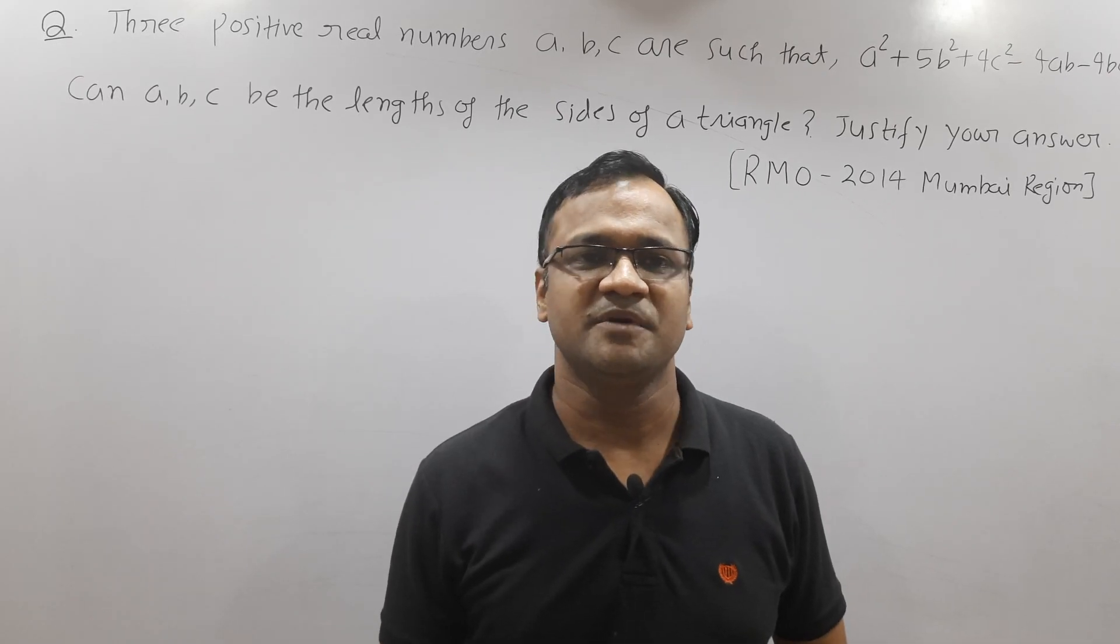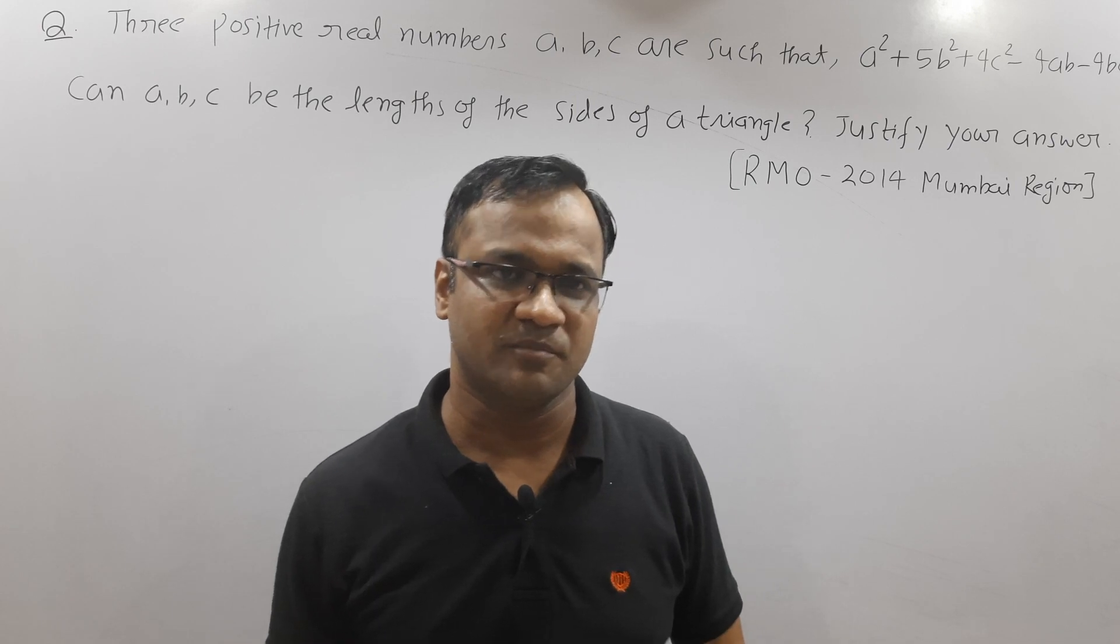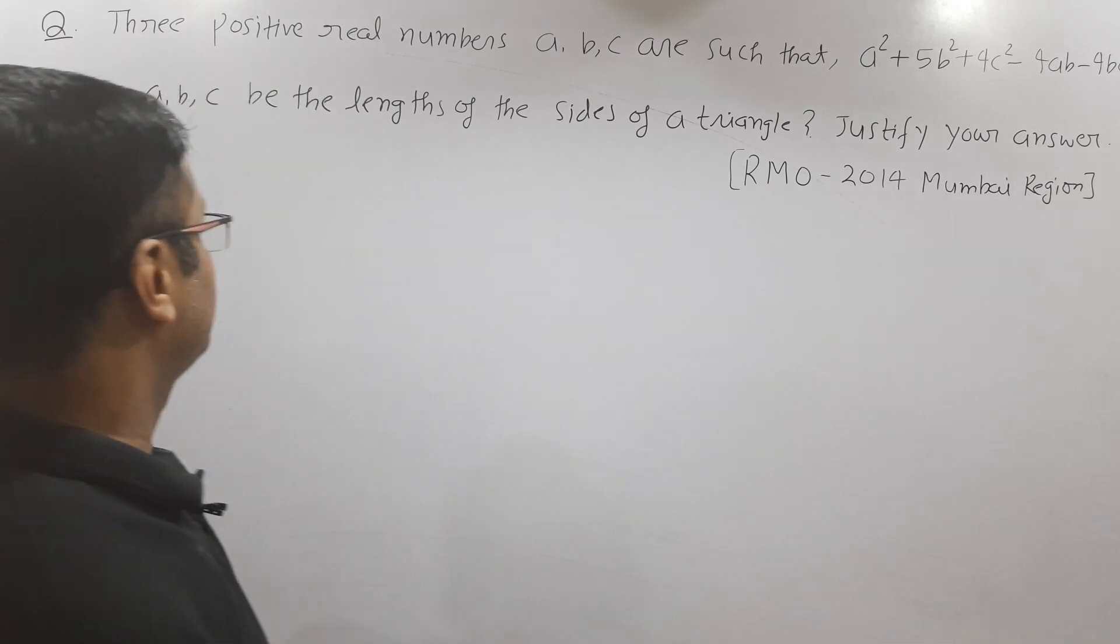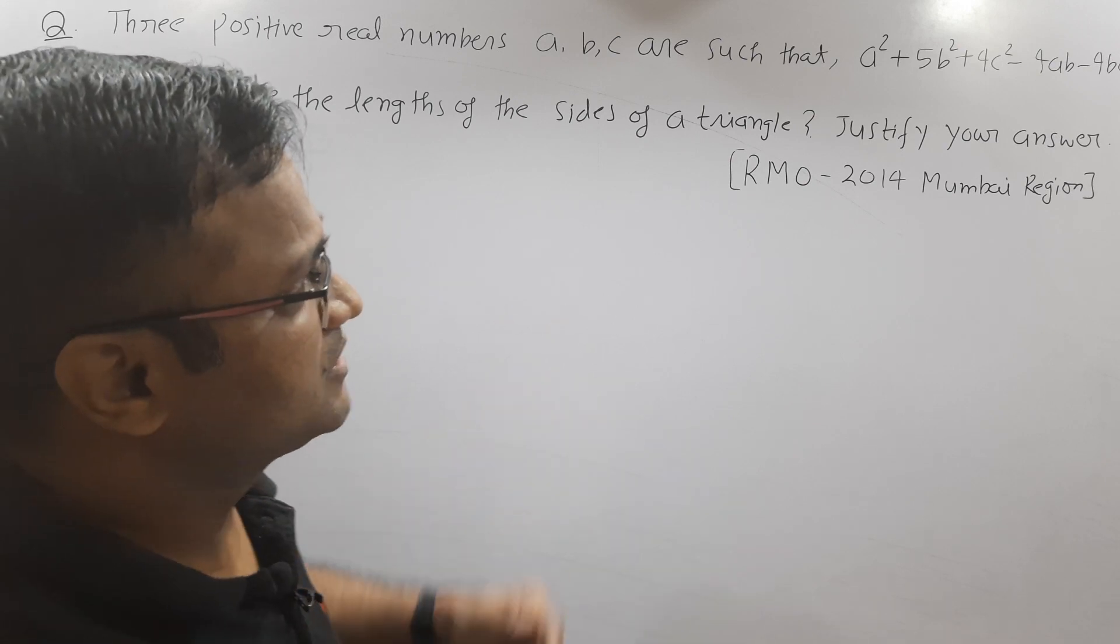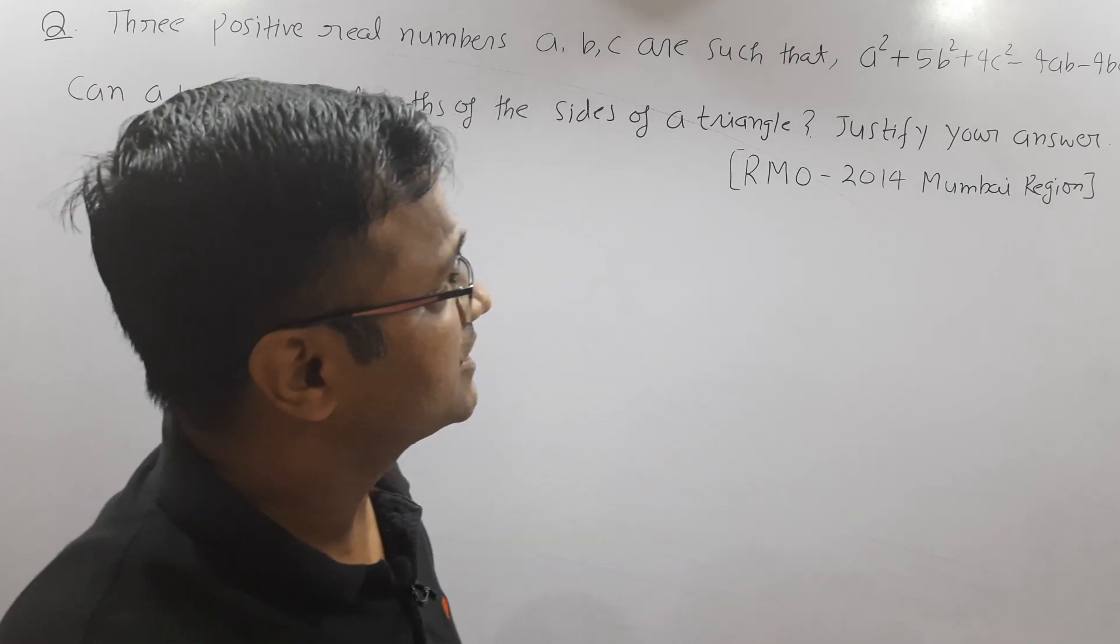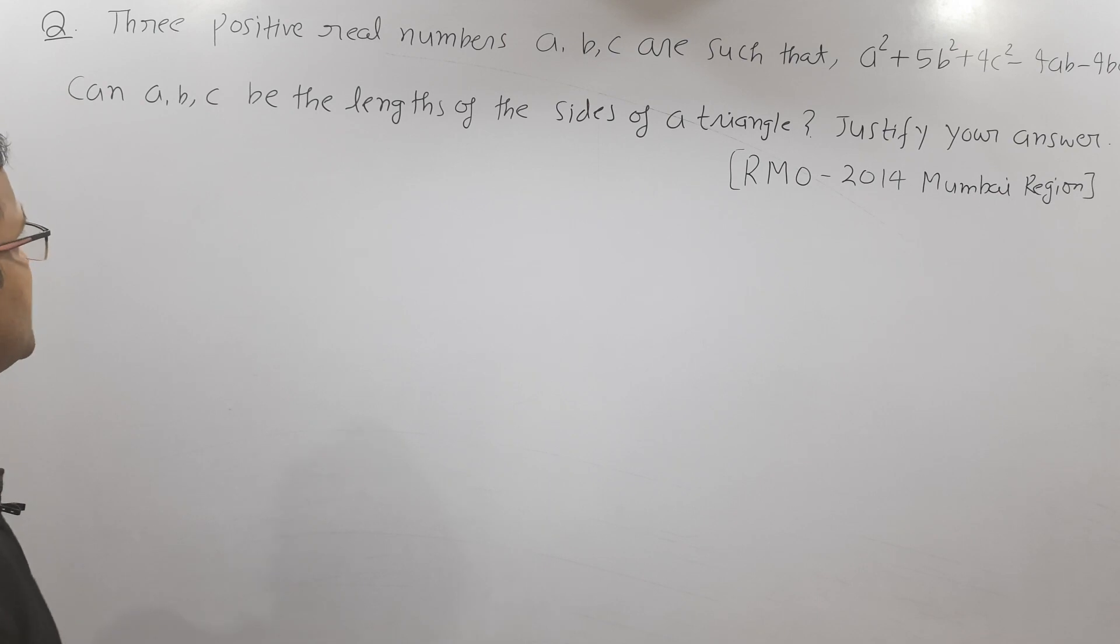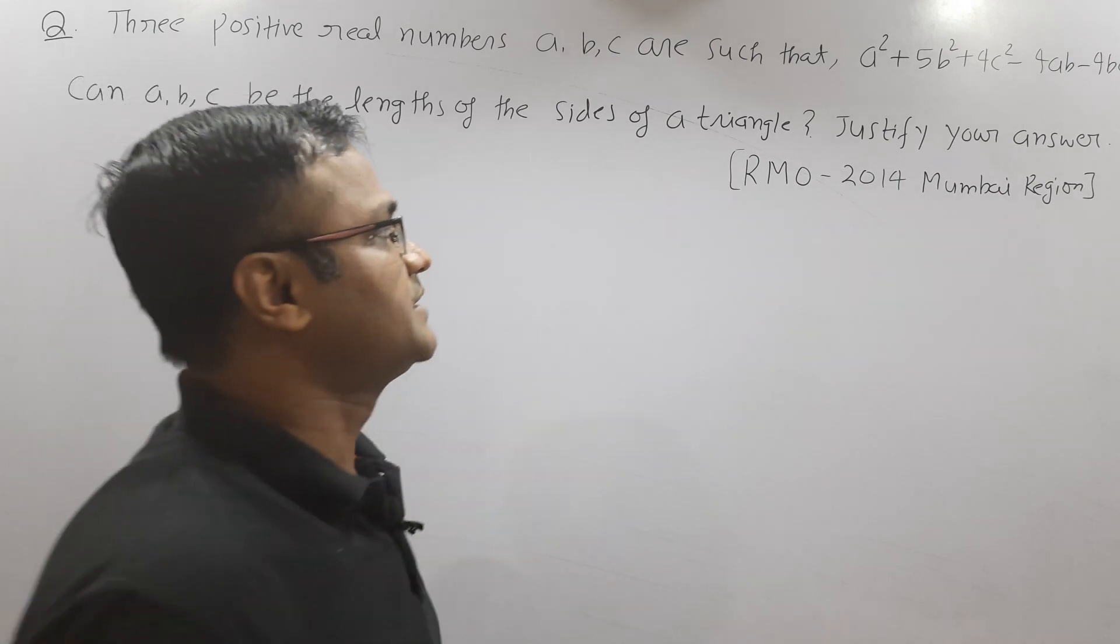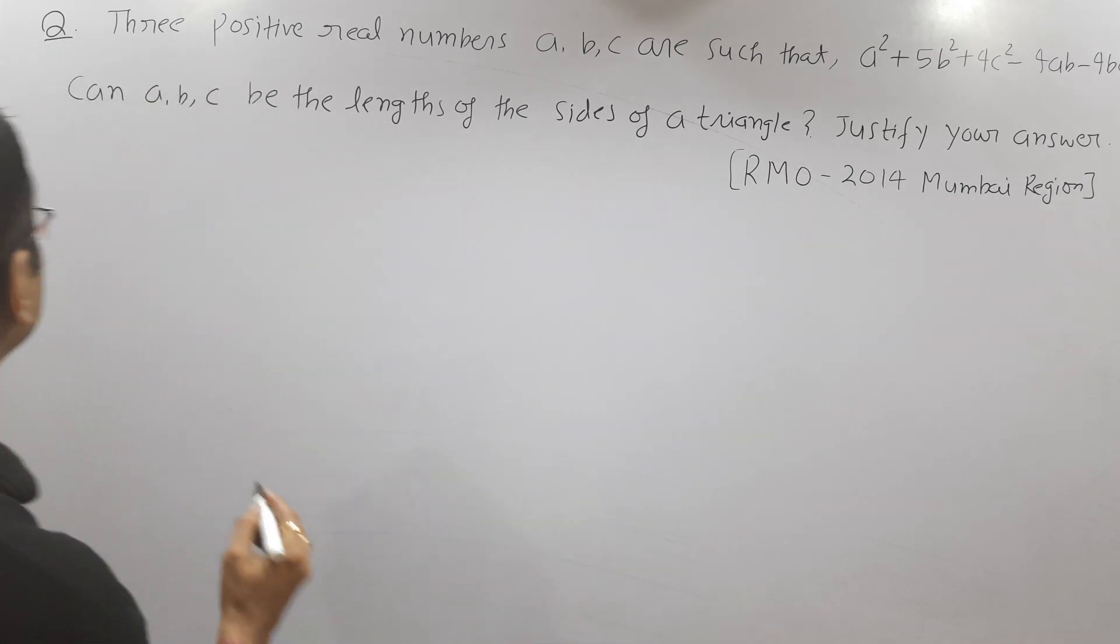Hello everyone, in this video I am going to solve a 2014 Regional Mathematics Olympiad problem from Mumbai region. You have given three positive real numbers a, b, c which satisfy the equation a² + 5b² + 4c² - 4ab - 4bc = 0, and you have to check whether a, b, c can be the side lengths of a triangle or not. Let's get started with the solution.